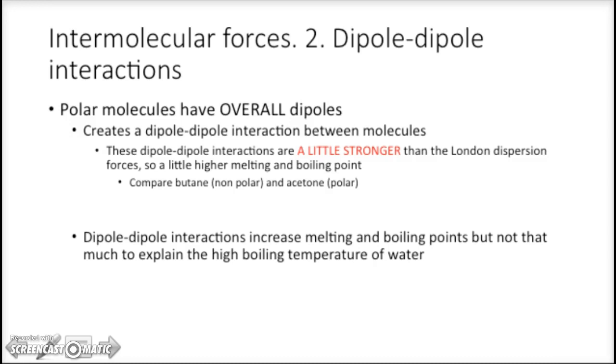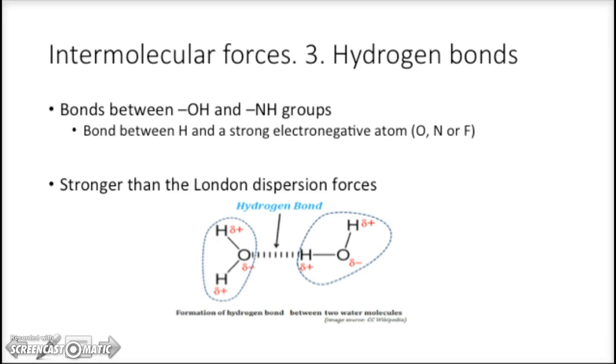But that doesn't explain why water has such a high boiling point or melting point. Something's going on over there. And that's the third intermolecular force, hydrogen bonds. And that's the bond between an OH and an NH group, or the bond between a hydrogen and a strong electronegative atom, like oxygen, nitrogen, or fluoride. And the hydrogen bonds are much stronger than the London dispersion forces. So here we see for water, the hydrogen bonds.